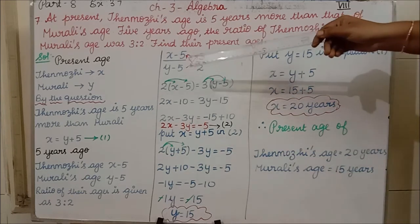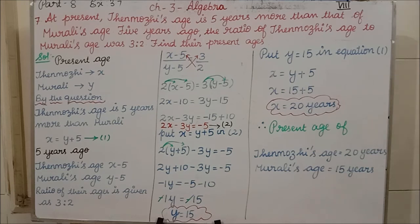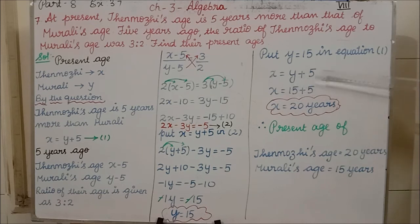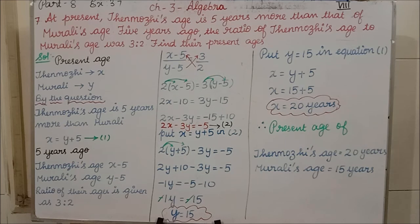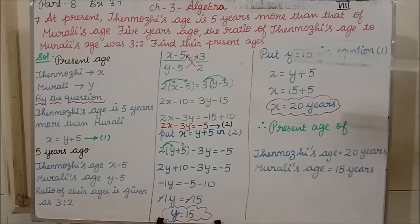Substituting Y equals 15 into equation 1: X equals 15 plus 5 equals 20. Therefore, Tenuri's present age is 20 years and Muradi's present age is 15 years.